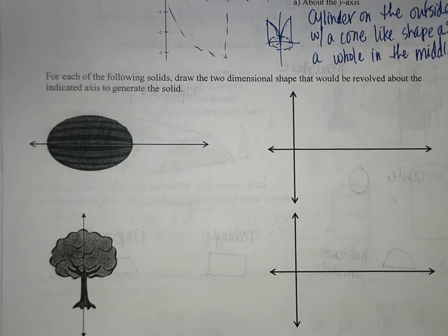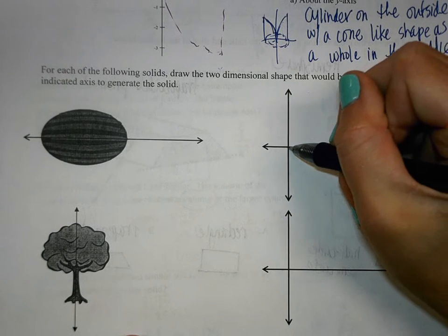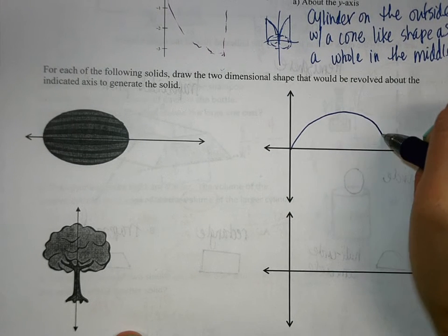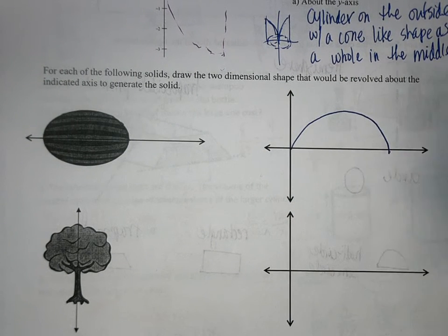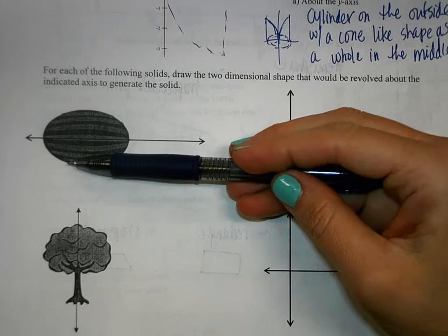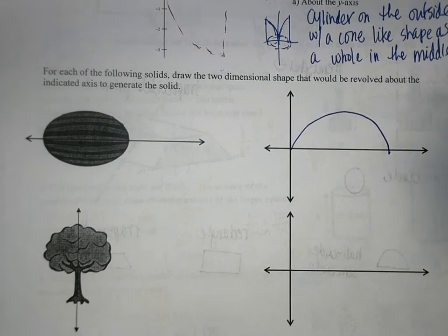Yeah, half of an ellipse, right. So if we were to just draw something kind of like this, if that were to rotate, it would make that three-dimensional figure of a watermelon.